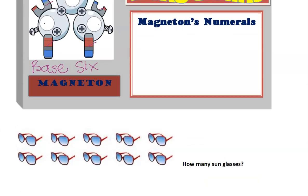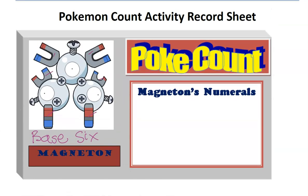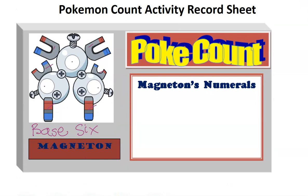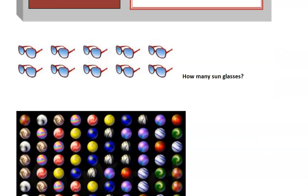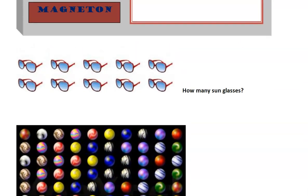Go ahead and complete this activity starting with what are the numerals, how does the place value chart look like, and then you can count how many items there are. In this case you will see 1, 2, 3, 4, 5, 6, 7, 8, 9, 10. Ten sunglasses in base 10 can be written as what in base 6? That's the question.